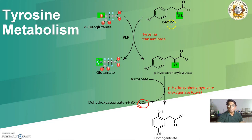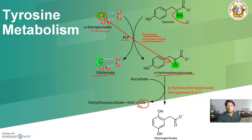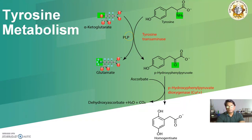The next step: tyrosine is converted to para-hydroxyphenylpyruvate. In this step, a transamination process takes place in the presence of PLP. As discussed in amino acid metabolism, a transaminase enzyme is involved, and alpha-ketoglutarate is converted into glutamate. The keto group transfers to one portion and the amino group transfers to glutamate — this is the transfer of groups catalyzed by the transaminase enzyme with PLP as cofactor.